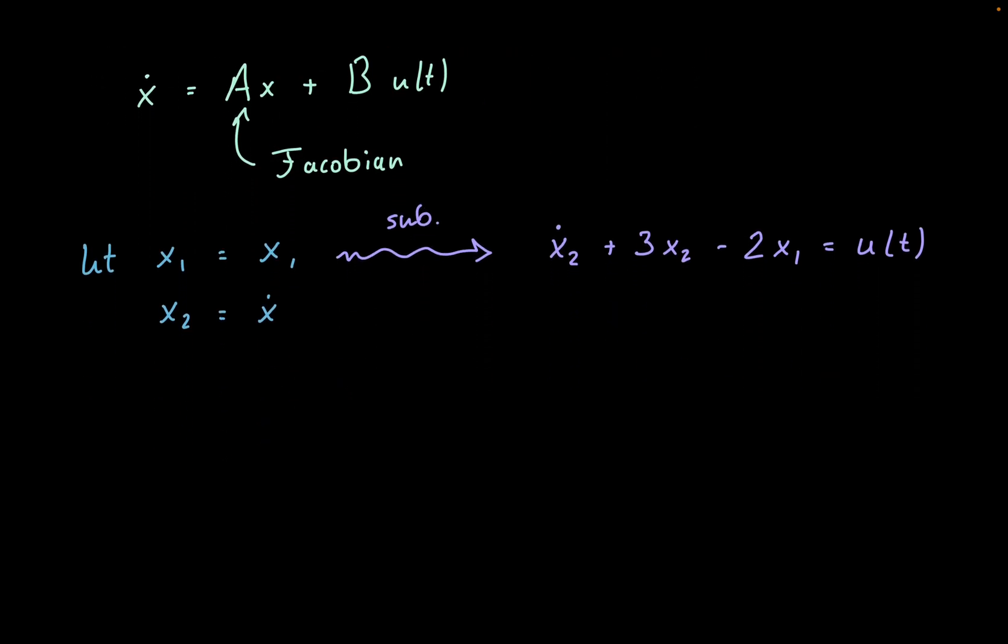Which, this one, it's not too bad. Because we can basically use the relation between x1 and x2. Because we know that x1 dot is going to be equal to x2. See? Not so bad.